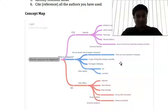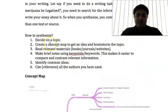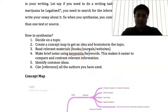You decide on a topic, you create a concept map to brainstorm, and then you read relevant materials — which could be anything: websites, books, journals. Then you make brief notes using keywords or points so that you can compare and contrast, and then decide what points you want to include in your academic essay.